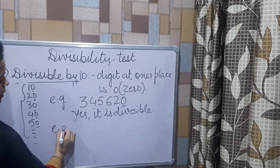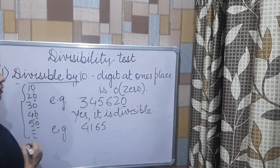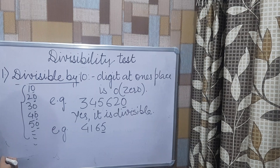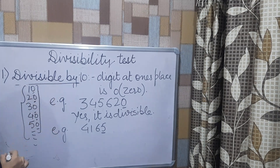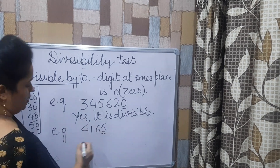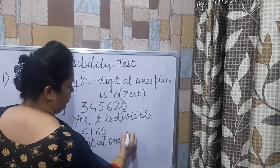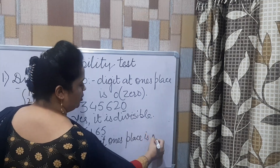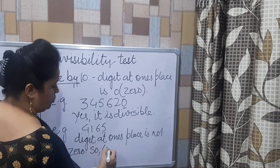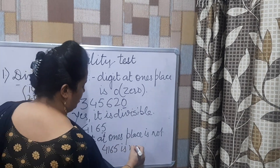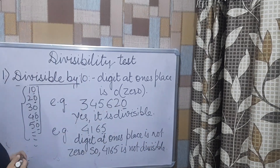Now suppose if I have another number, 4,165. In this case, you can see the number ends with 5. The digit at the 1's place is not 0. So it is not divisible by 10. I will write: digit at the 1's place is not 0, so 4,165 is not divisible by 10. Thank you.